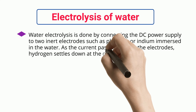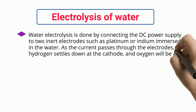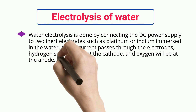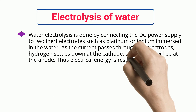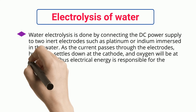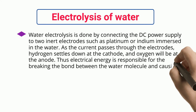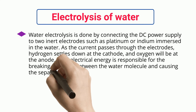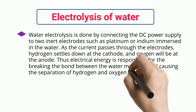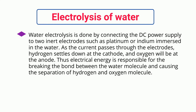As the current passes through the electrodes, hydrogen settles down at the cathode and oxygen will be at the anode. Thus electrical energy is responsible for breaking the bond between the water molecules and causing the separation of hydrogen and oxygen.